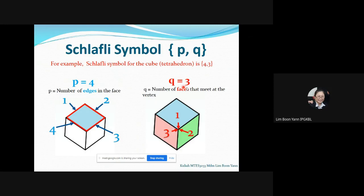So then q equals to one, two, three. Q equals to three. So p equals to the number of edges, one, two, three, four edges, so p equals to four. Q refers to the number of faces, one, two, three meeting at this point, so q equals to three.